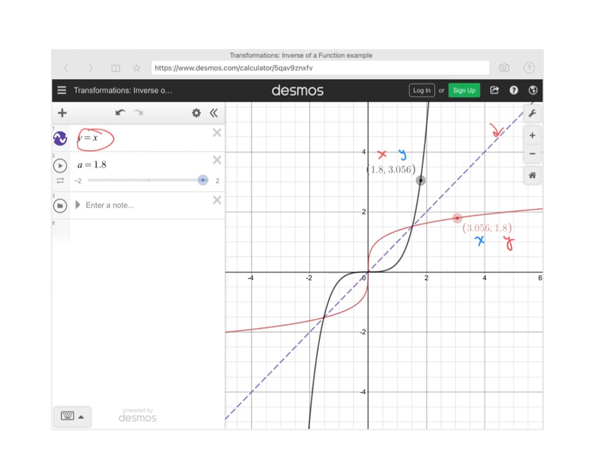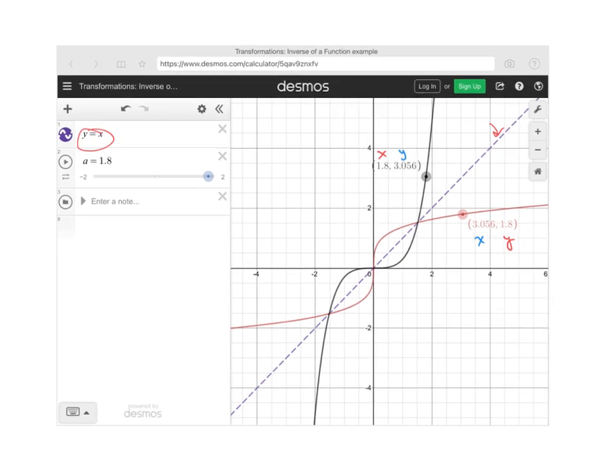As you move along the function, the x's and y's are switching in the inverse function. And the graphs are symmetric about the line y equals x.